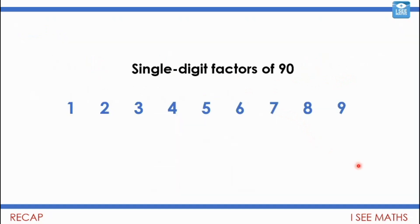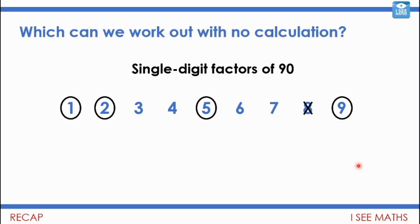We had a look at examples like this: which are the single-digit factors of 90? We said we can work some of these out with no calculation. Every whole number has one as a factor. If the number is even, two is one of its factors. If a number ends in a zero or a five, then five is one of its factors. And ten lots of nine is 90, so nine must be a factor.